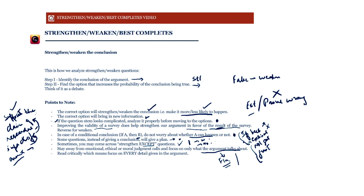Read critically — focus on every detail given in the argument. Do not gloss over anything. The first step in strengthen and weaken questions is to identify the conclusion, which is the purpose of the author: it is the reason he wrote the argument, the opinion he wants to convey.